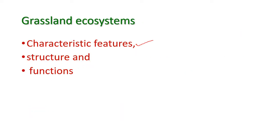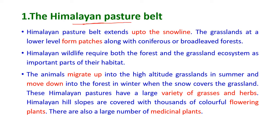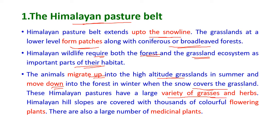Characteristic features, structure and functions: the first type is the Himalayan pasture belt. The Himalayan pasture belt extends up to the snow line. The grasslands at the lower level form patches along with coniferous or broad-leaved forests. Himalayan wildlife requires both forest and grassland ecosystems as important parts of their habitat. Animals migrate up into the high-altitude grasslands during summer and move down into the forest during winter when snow covers the grassland. These pastures have a large variety of grasses, herbs, colorful flowering plants, and many medicinal plants.